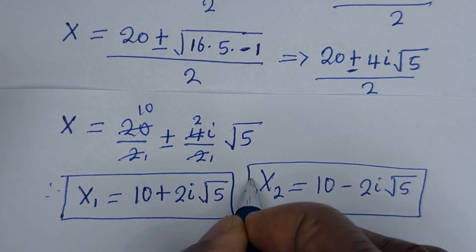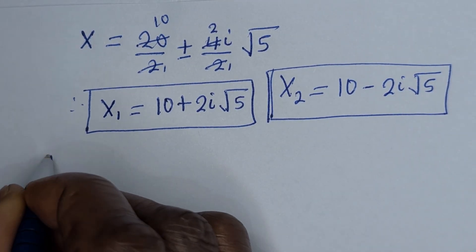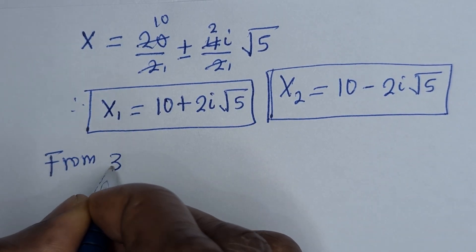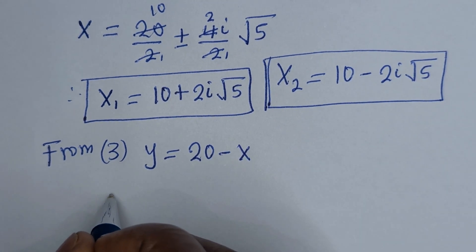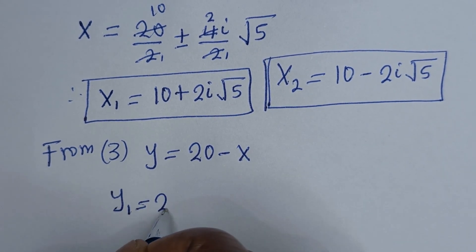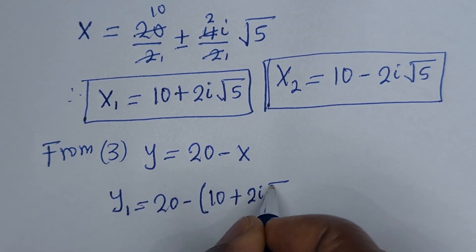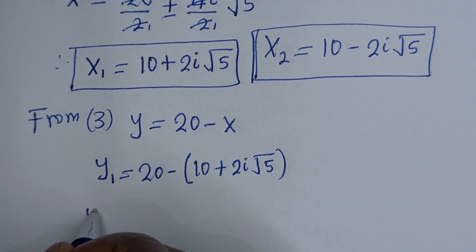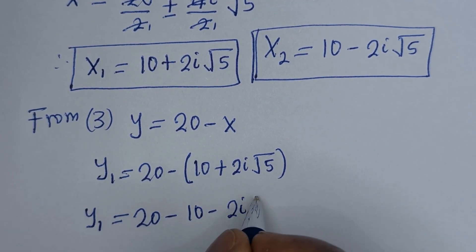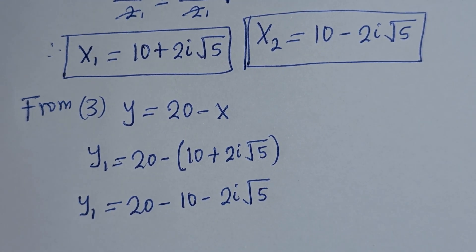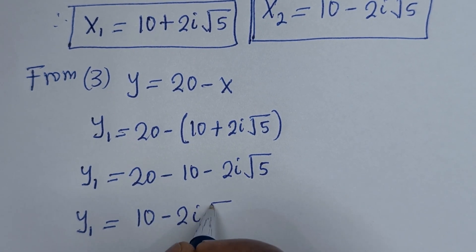These are the values of x. Now let us solve for y1 and y2. From equation 3, y is equal to 20 minus x. So y1 is equal to 20 minus x1, which is 20 minus (10 plus 2i root 5). Therefore, y1 is equal to 10 minus 2i root 5.